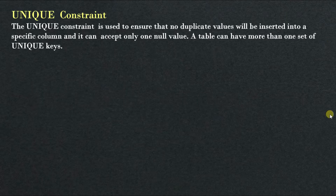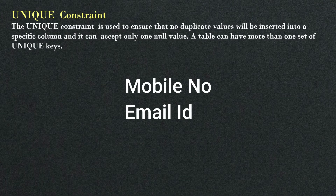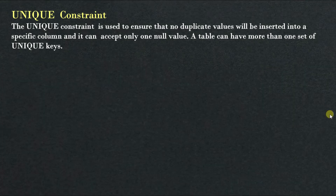UNIQUE CONSTRAINT — as you can tell from the name, it stores unique values. Unique constraint is simply that it just stores a unique value. For example, your mobile number and email ID — your mobile number and email ID do not match any other person's. Why? Because they are unique. The value must be unique if you use a unique constraint. You cannot enter a duplicate value. Whatever value you insert in the table should be different, not repeated.